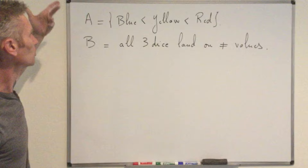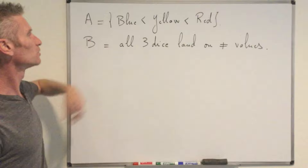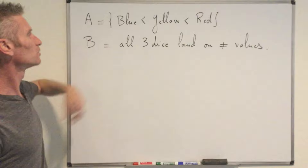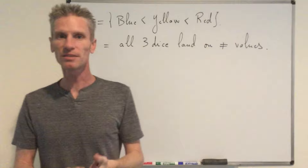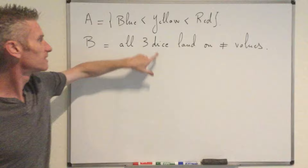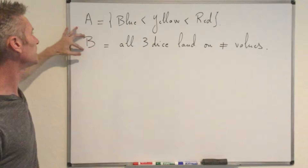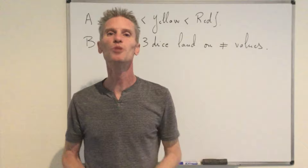The motivation is that P(B) is much easier to compute than P(A). It also turns out that if you know B, then there is indeed a strict ordering of the three colors, so P(A|B) is also easy to compute. What about P(A|B complement)? That's even easier. Given B complement, two of the dice land on the same value — that cannot happen. So P(A|B complement) equals 0.